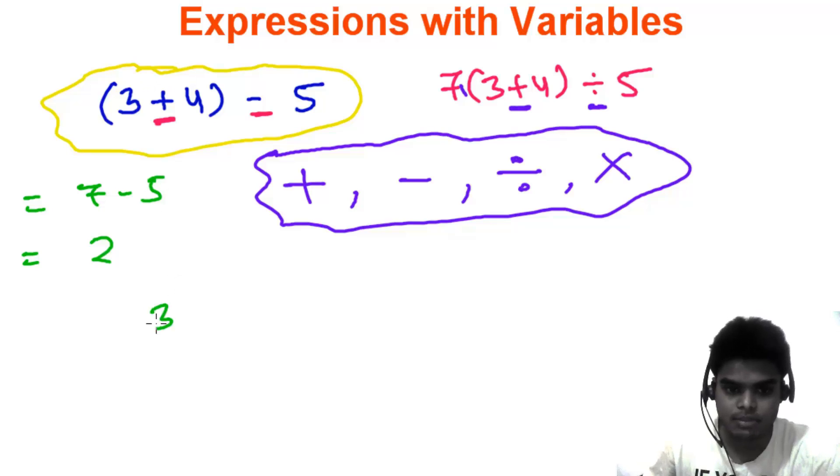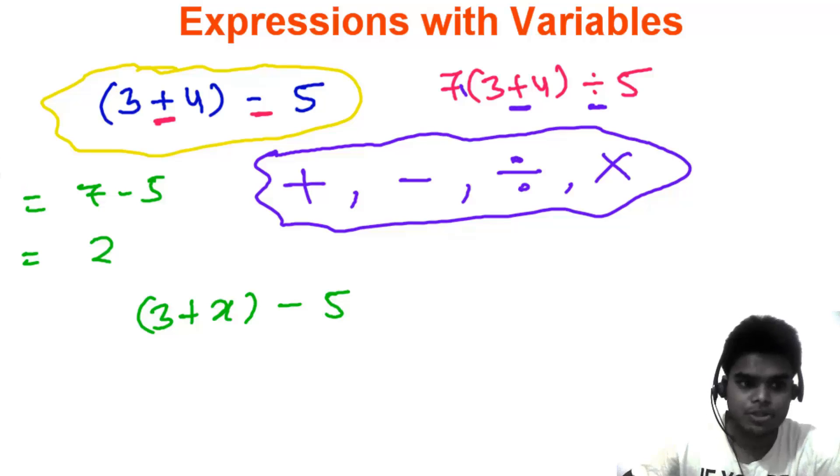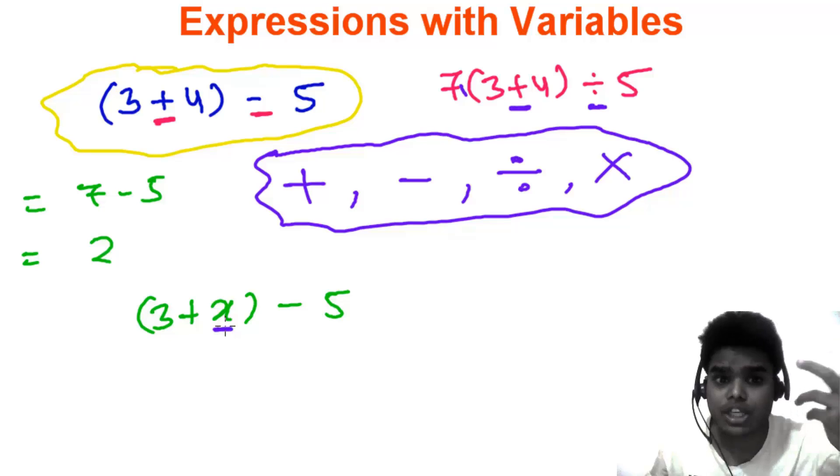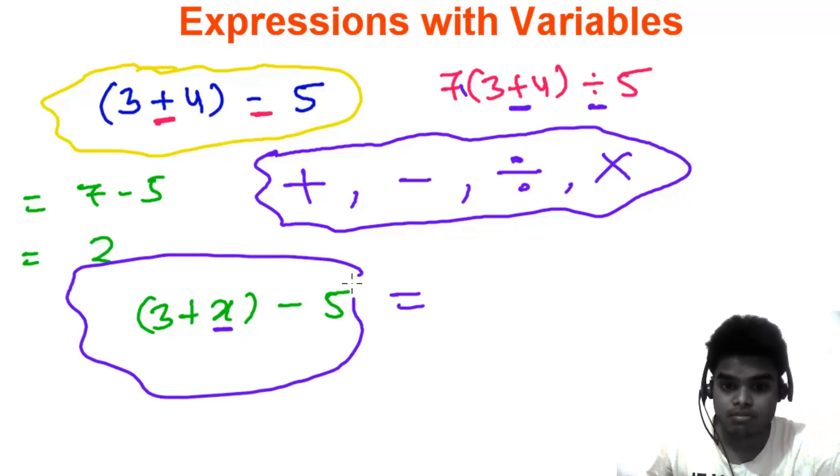But now if you come to the expression with variables, let's say the same thing, I'm writing something like this: 3 plus x minus 5. So you already know what is x and what is variables. So the value of x, you don't know to find the total. We cannot find the result. It's very difficult to calculate what is the value of this. But if you know the value of x, if the question is given, the value of x is 2, so you can easily solve this.